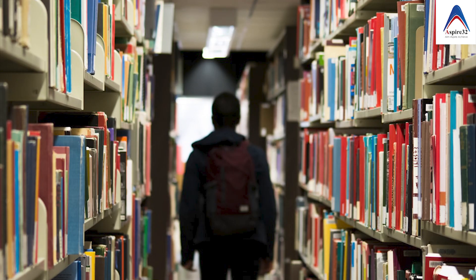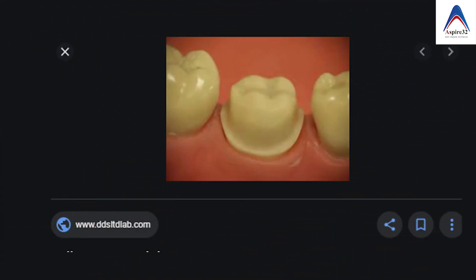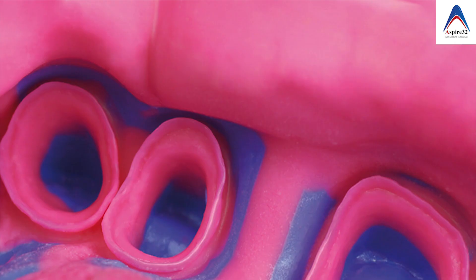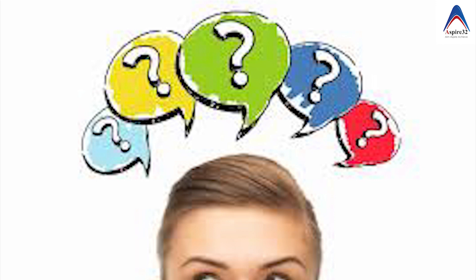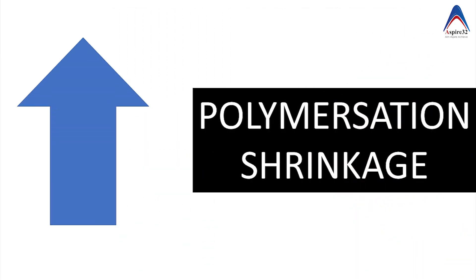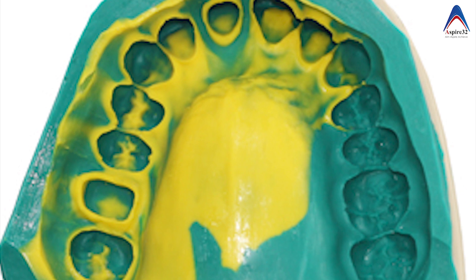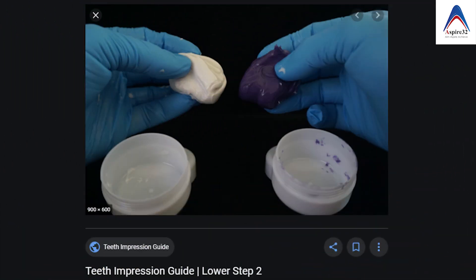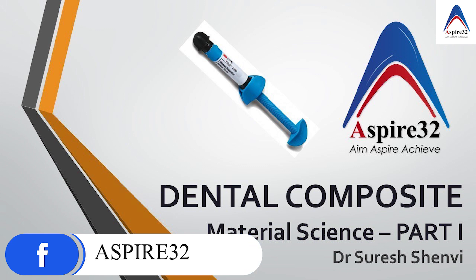Why do you need so many consistencies? When you do preparation on the tooth, the margin is very thin, and a thin consistency impression material will record this area in a much better way. These thin consistency materials have less filler, so they flow better. However, light body has more polymers and less filler, which leads to more polymerization shrinkage. To overcome this, we form the major bulk of the impression with thicker consistency materials. Using putty also helps push the light body impression material over the tooth structure.